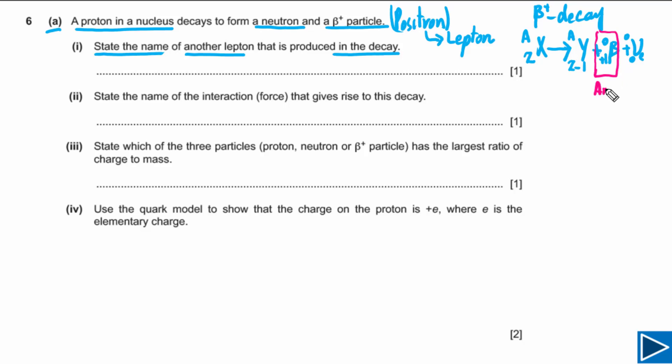The way to remember this: if the emitted particle is an anti-particle — that is, the positron is the anti-particle of the electron — then the other particle has to be a particle, meaning it has to be the neutrino. Vice versa is also true: if the emitted particle is the electron, then the other particle has to be the anti-neutrino, the electron anti-neutrino. This is due to lepton number conservation.